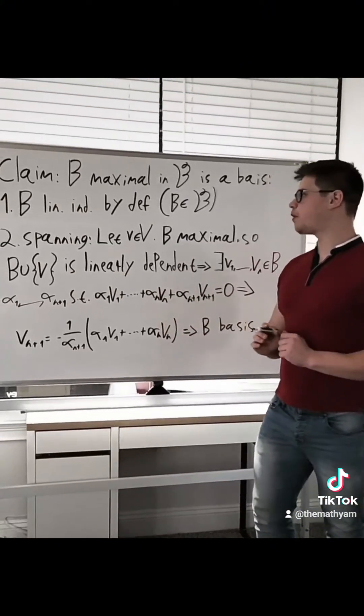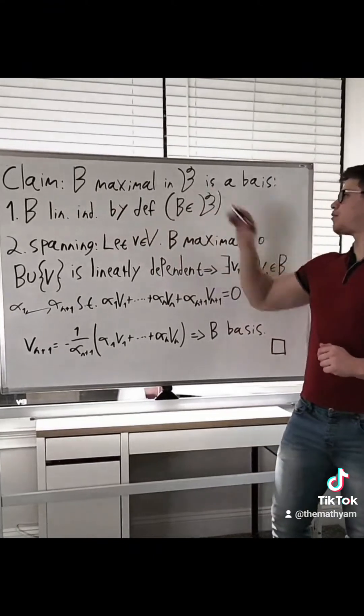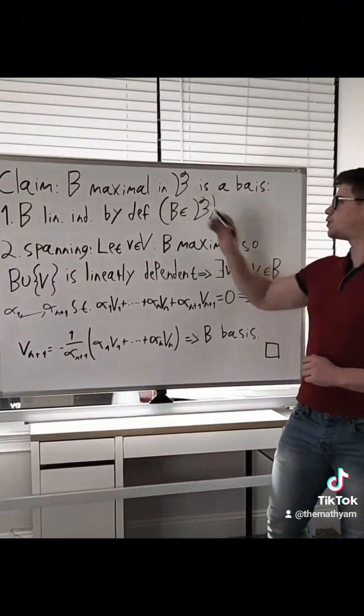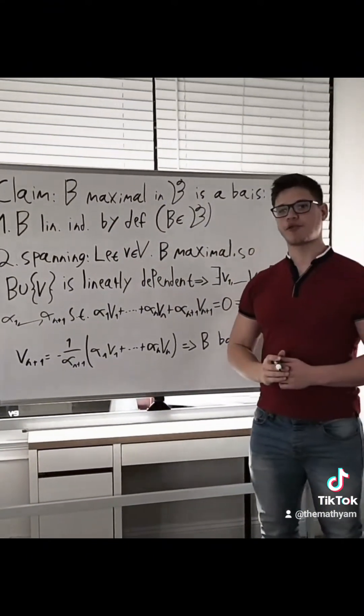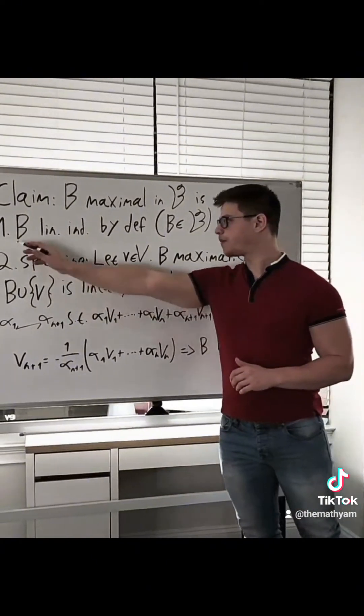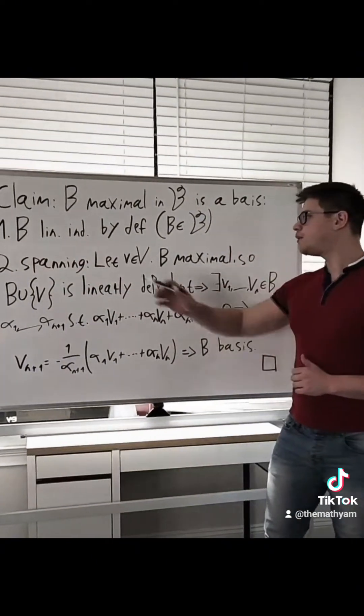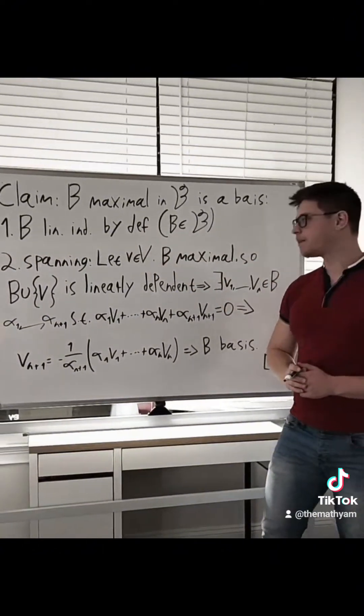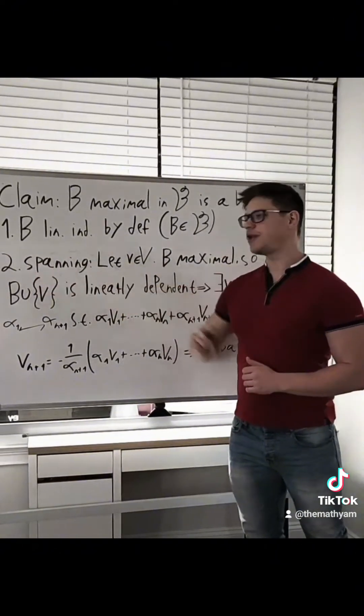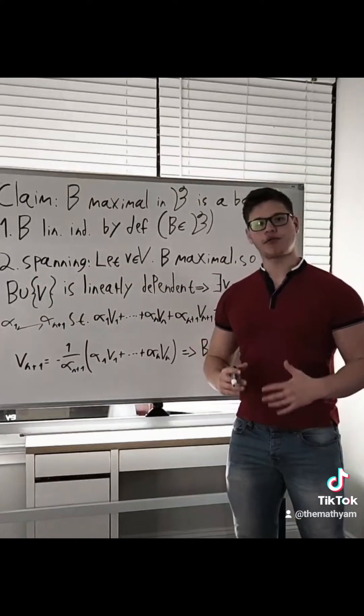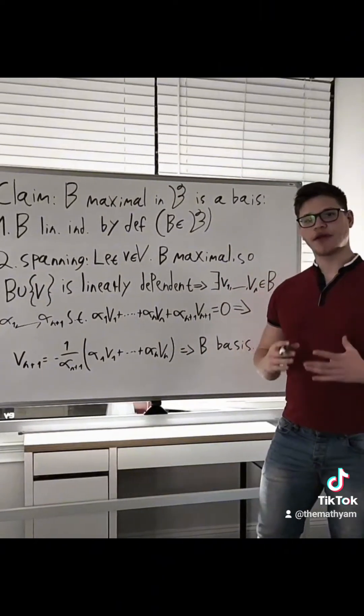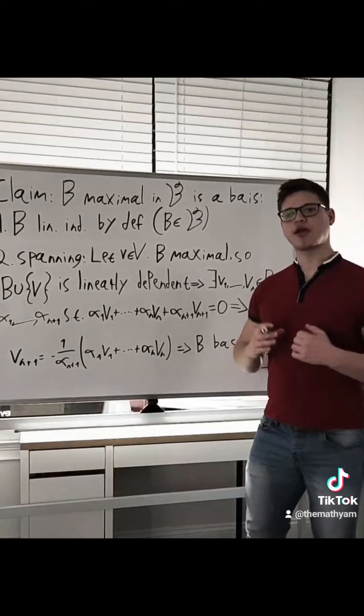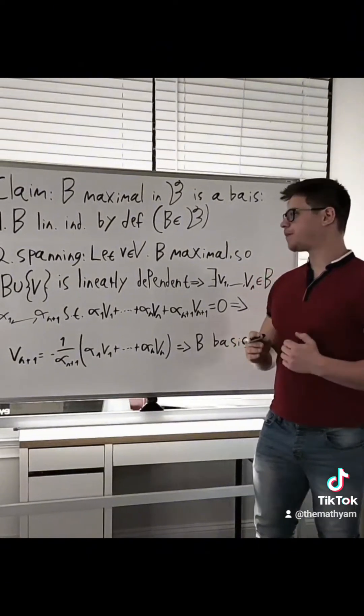So on the previous board, we obtained this maximal subset inside of B, and we wanted to show that it's actually a basis of our vector space. So we need to check two things. First of all, that B is linearly independent, but this is true just because by definition we took it to be inside of B. The other thing is that we need to show that it spans. In other words, any vector inside of our vector space V can be written as a linear combination of vectors of B.